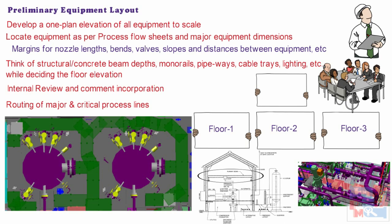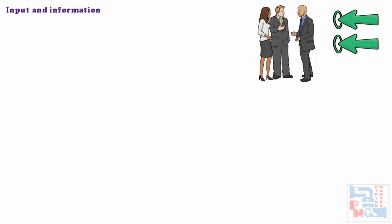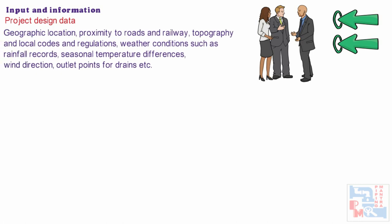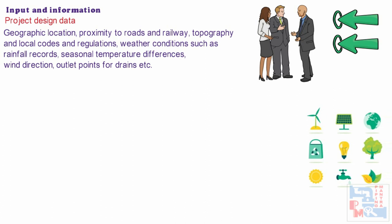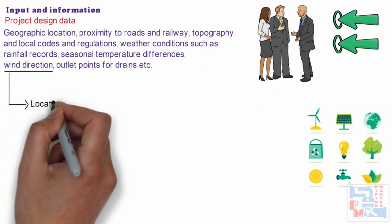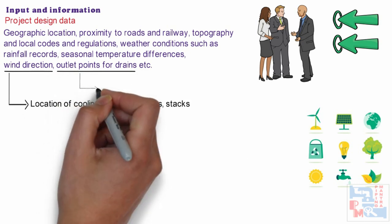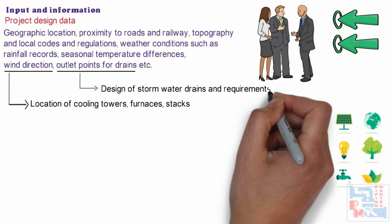Before proceeding further, let's briefly discuss the input or information collected from various groups to complete the equipment layout effectively. Project Design Data consists of the following information: geographic location, proximity to roads and railways, topography, local codes and regulations, weather conditions such as rainfall records, seasonal temperature differences, wind direction, and outlet points for drains. As already discussed, wind direction influences the location of cooling towers, furnaces, stacks, etc. Similarly, information regarding outlet drain points affects the design of storm water drains and requirements of enclosures.